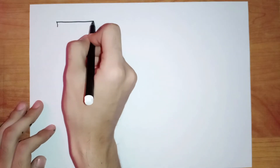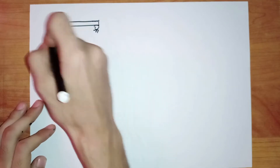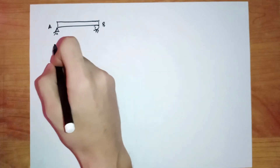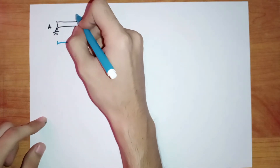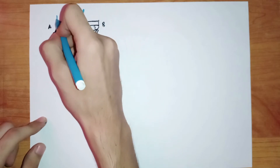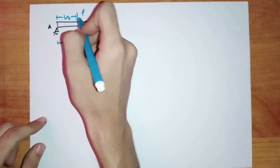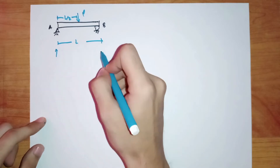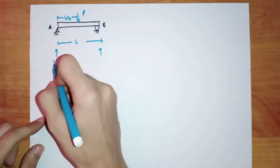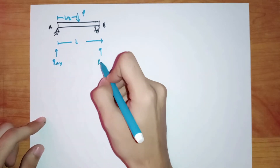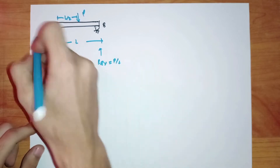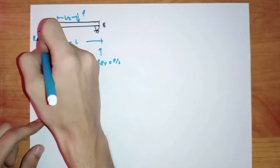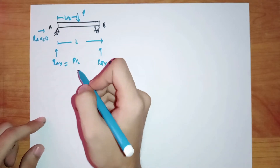Let's say we have a beam, a simply supported beam, and let's call it AB. The length of the beam is L, and there is an external load acting at a distance of L over 2 from point A. Now, we know that the loading on this beam is symmetric, so RAY and RBY will be equal to each other and will be equal to P over 2, and RAX will be equal to 0, and there are no forces in the horizontal direction.